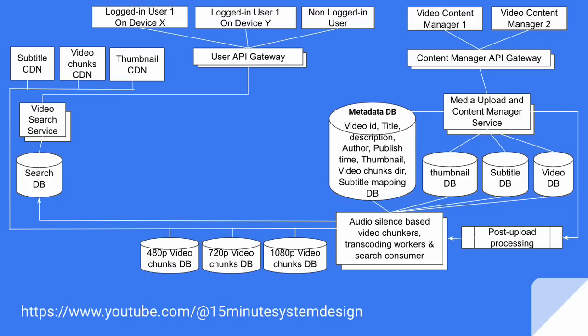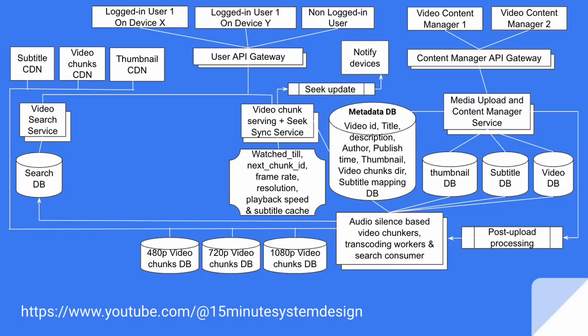Now let's talk about the user side. There are two users — one is a logged-in user and the other is a non-logged-in user. The logged-in user is online on two different devices: device X and device Y. All these devices are connected to a user-side API gateway, where they can search using a particular title or keyword via the video search service, which consumes the search database that was populated by the search consumer in the previous step. Now let's talk about video serving. Once we select a particular video, there should be one service responsible for serving video chunks in sequence.